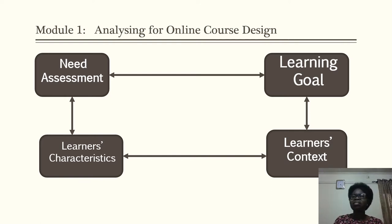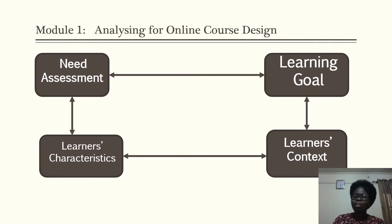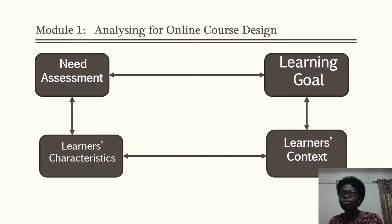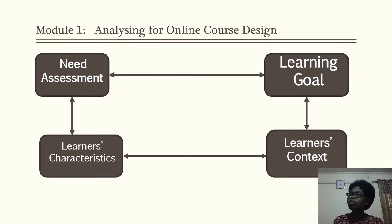In the area of learner characteristics, you try to find out who the learners are. Who am I writing for? Because if you don't know whom you are writing for, you may either overload them or underload them. You need to know the group of persons you are writing for. Yes, you are writing for university students, but within the university students you have different characteristics — their ages are not the same. You have those that are 18, even 16 or 15 years of age.